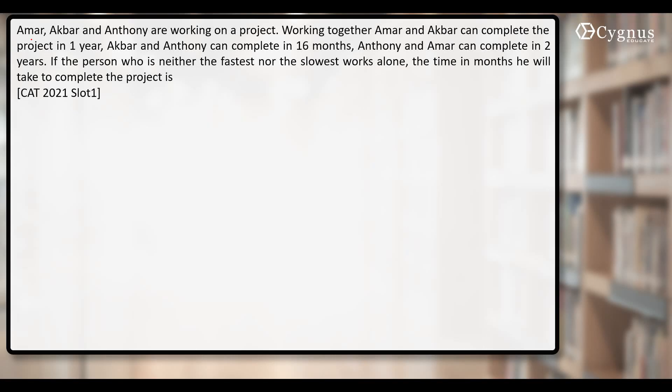It is given that Amar, Akbar and Anthony are working on a project. Working together, they are working in pairs. The first pair is of Amar and Akbar. They take how much time to finish a project? One year. Let's take it equal to 12 months because we need to answer this question in months.